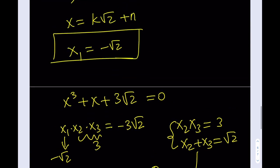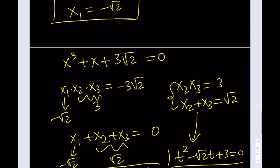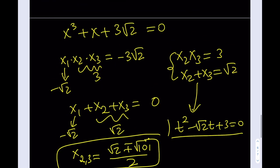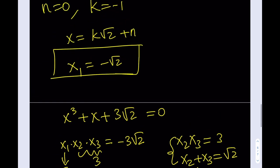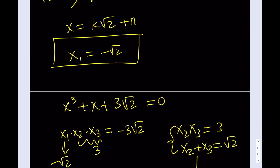So those are all the solutions: x1 equals negative root 2, and x2, x3 equal root 2 plus or minus root 10i divided by 2. That's it for this video. Thank you for watching. Don't forget to comment, like, and subscribe, and I'll see you in the next video. Until then, be safe. Take care. Bye-bye.